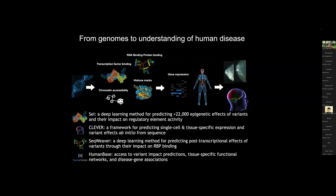Everything that we do, as well as many other projects that we have, such as tissue-specific functional networks and disease gene associations from functional omics data, all of this is available through HumanBase — our website at humanbase.io, really developed from the Flatiron Institute.